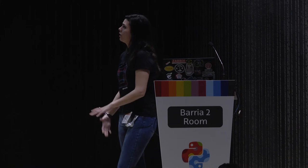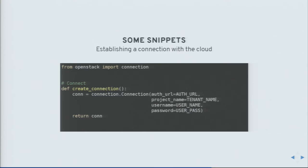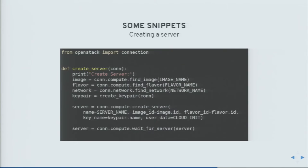Here are some code snippets. Creating a connection is the same for any cloud: you instantiate your connection with the auth URL, project name, username, and password. You can then interact with all services in your cloud through that single connection. To create a server, you need an image, a flavor (the size of the instance), a network if already defined, and a keypair to access your server. Then you simply call compute.create_server with that information.